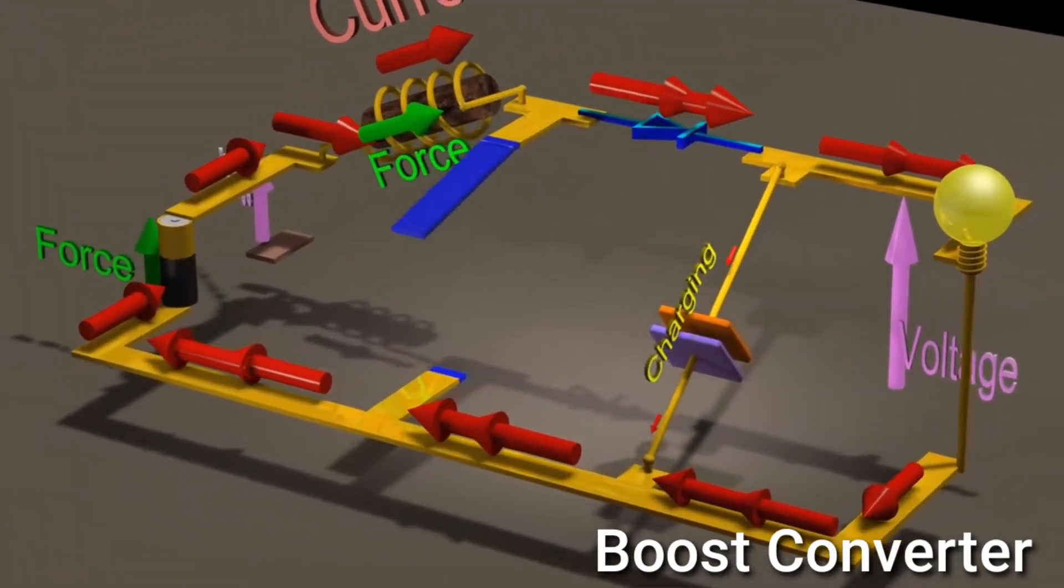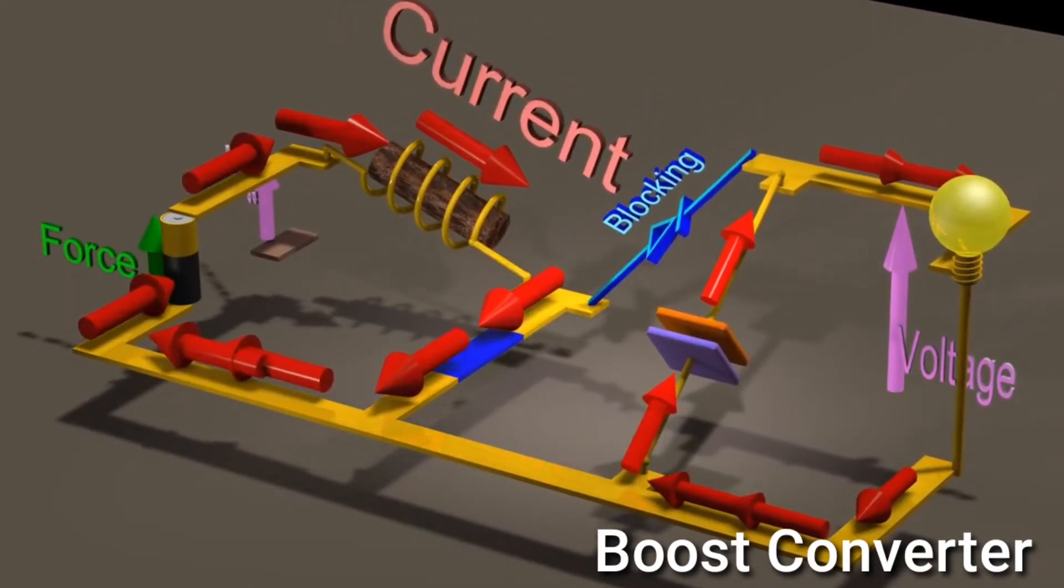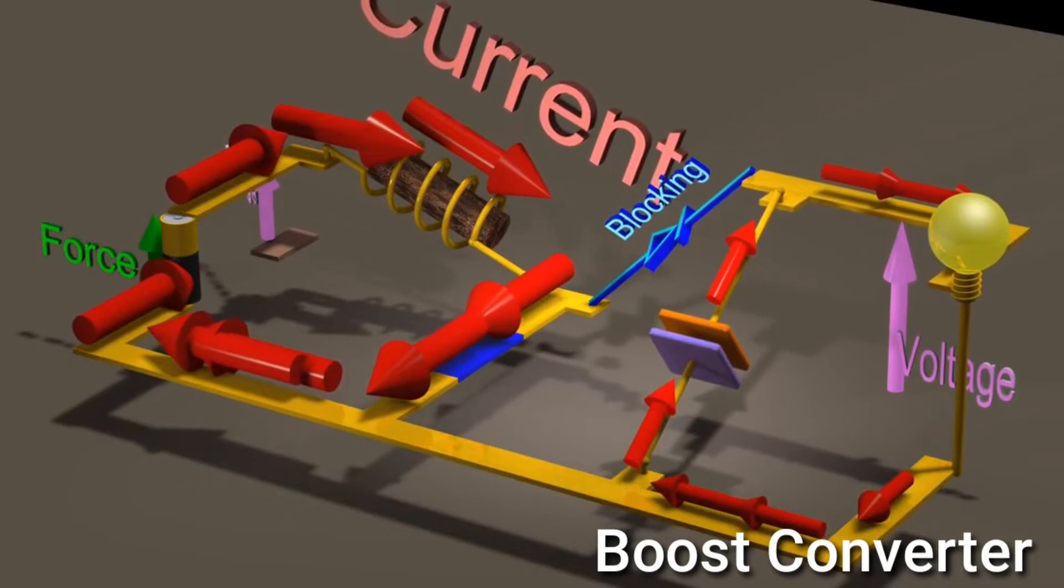We can control the value of the DC output voltage at the light bulb by controlling the percentage of time that this switch is on.